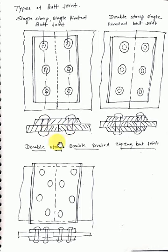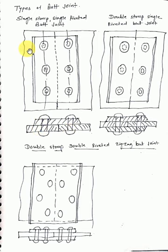There is one rivet here and one rivet here. The two main plates sit side by side, and there is one cover plate over them — this is called the single strap, single riveted butt joint.